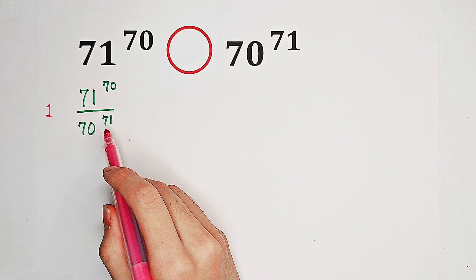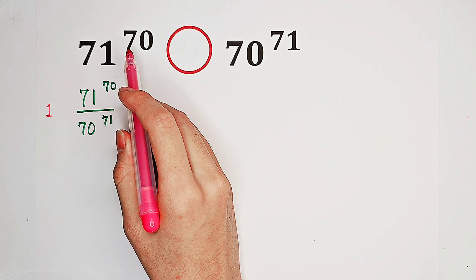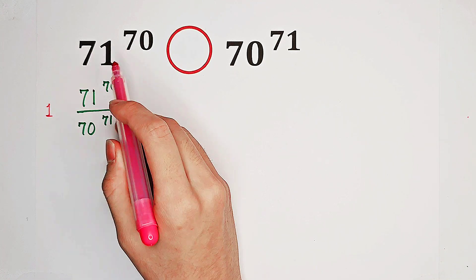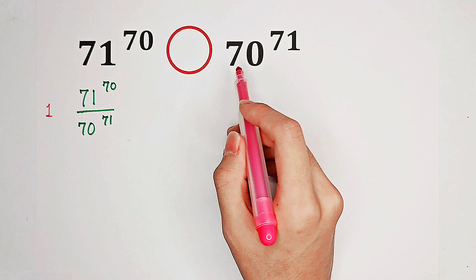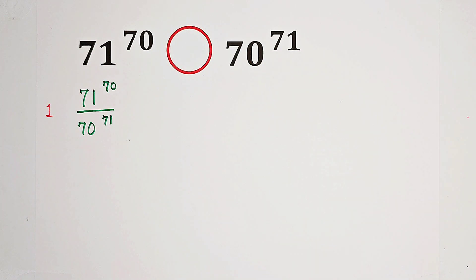If this guy is greater than 1, then 71 to the power of 70 is greater. If this is less than 1, then 70 to the power of 71 is greater. So, now what we're going to do is, look,